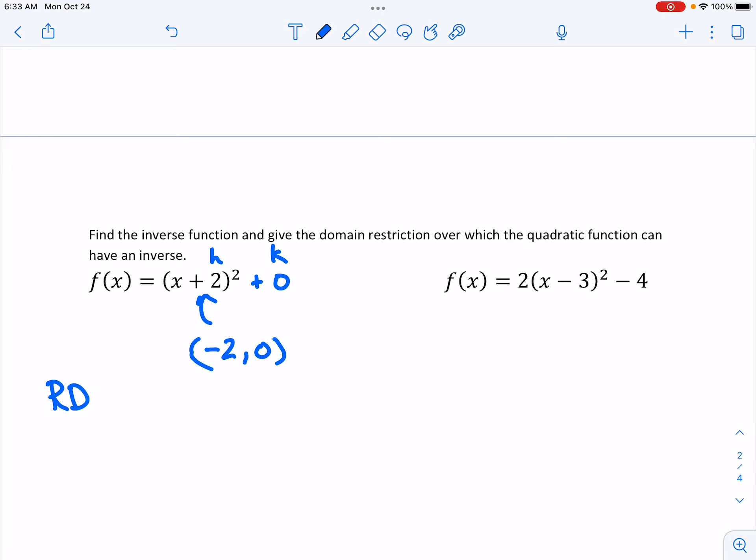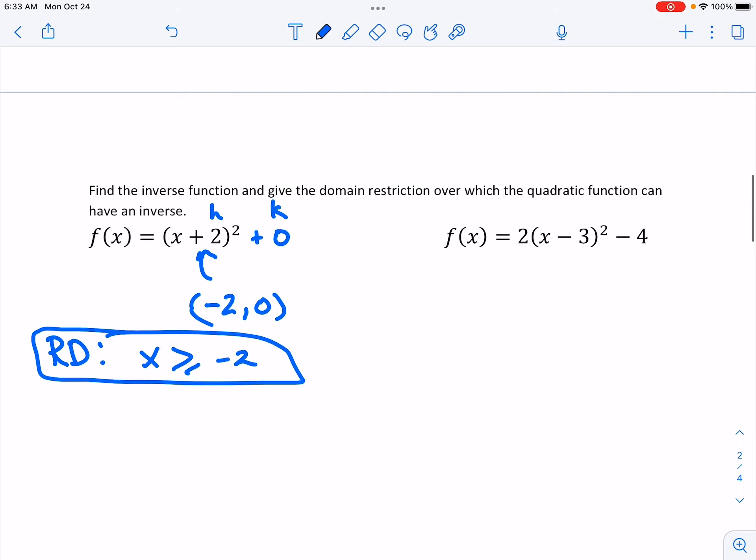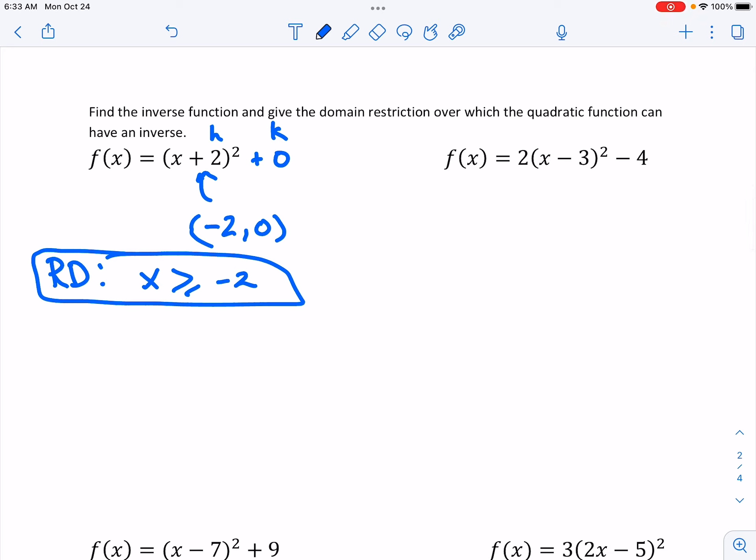Restricted domain to x values that are greater than or equal to negative 2. One way to look at it is you can just switch the sign on the number that comes after the x if it's in vertex form and it'll always be greater than or equal to that number.